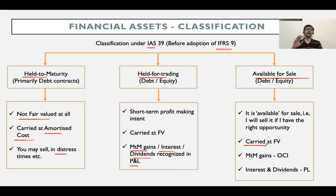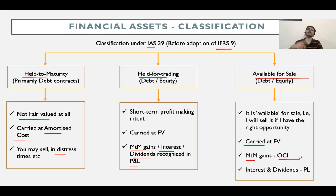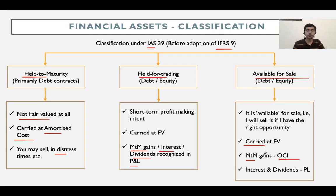Available-for-sale debt or equity instruments are carried at fair value on the balance sheet. In my example, the fair value was $110 on the balance sheet date, so I show it at $110. The mark-to-market gain — the $10 difference — is not recognized in the P&L account this time, but instead in a separate component called other comprehensive income (OCI). OCI is a section below the P&L where certain items prescribed by accounting standards are taken, so they do not impact P&L volatility. One such item is the mark-to-market gain on available-for-sale assets.